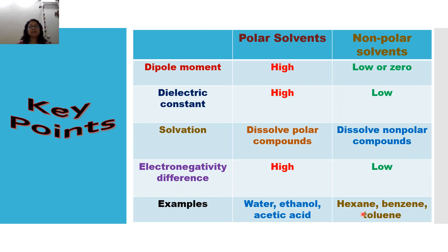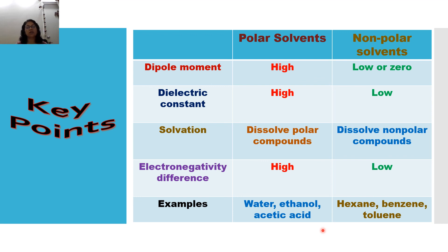Key points summary: Polar solvents have high dipole moment; non-polar solvents have low or zero dipole moment. Dielectric constant is high for polar solvents and low for non-polar solvents. Polar solvents dissolve polar compounds; non-polar solvents dissolve only non-polar compounds. Electronegativity difference is high in polar solvents and low in non-polar solvents. Examples of polar solvents: water, ethanol, acetic acid. Examples of non-polar solvents: hexane, cooking oil, kerosene, coconut oil.